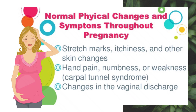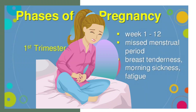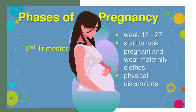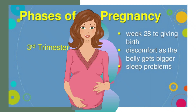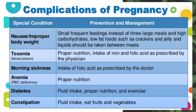The first trimester (weeks 1 to 12) involves a missed menstrual period, breast tenderness, morning sickness, and fatigue. The second trimester (weeks 13 to 27) is when the mother starts to look pregnant, wears maternity clothes, and experiences physical discomforts. By week 27, the fundus will be about 2 inches (5 centimeters) or more above the navel. The third trimester (weeks 28 to giving birth) brings increasing discomfort as the belly gets bigger, along with sleep problems.